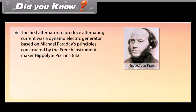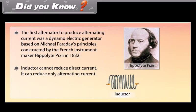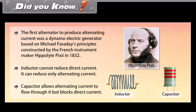Did you know: the first alternator to produce alternating current was a dynamo electric generator based on Michael Faraday's principles, constructed by the French instrument maker Hippolyte Pixie in 1832. An inductor cannot reduce direct current — it can reduce only alternating current. A capacitor allows alternating current to flow through it but blocks direct current.